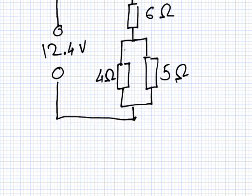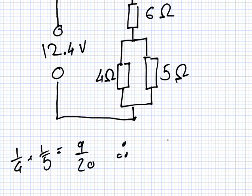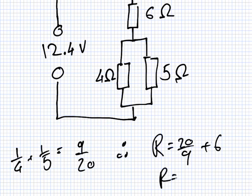Yeah, very good. So we'll do one over four plus one over five. That is one over... I'm sorry, nine over twenty. Which means the resistance is twenty over nine plus six, which will work out to be eight point two two.